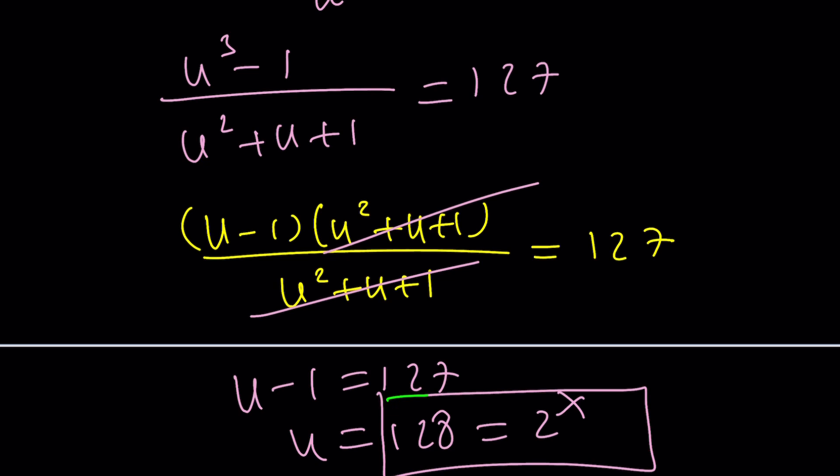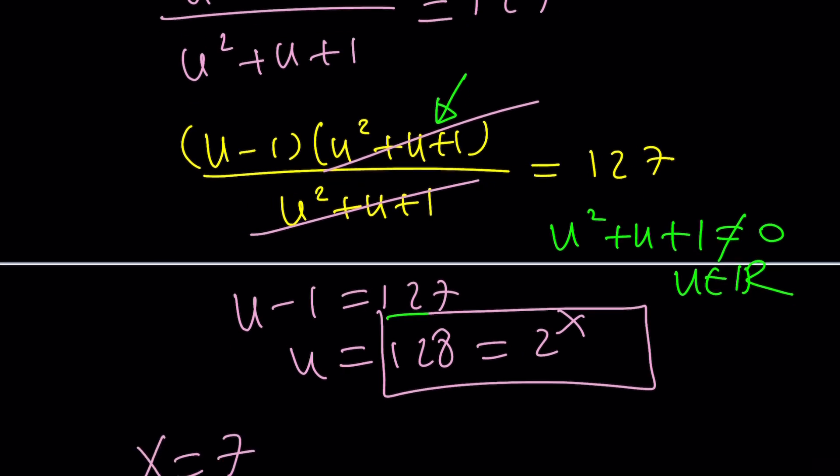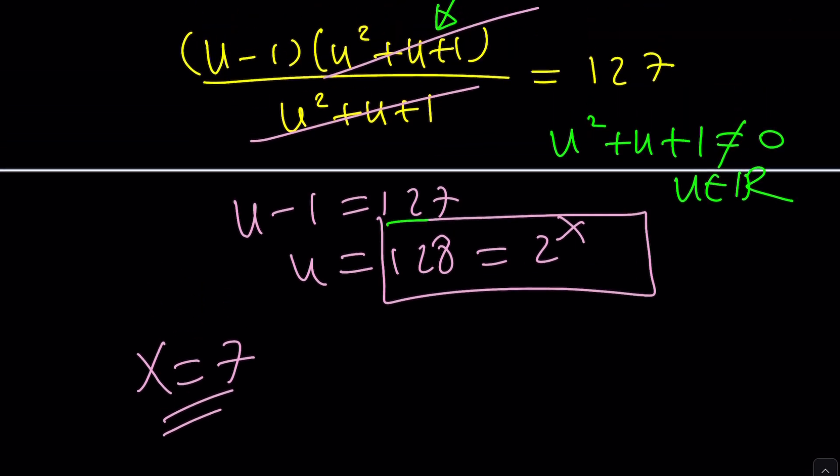Anyway, so this is how you can solve it, pretty much. And one of the things that I was saying is maybe there are complex solutions. Oh, by the way, one thing to be careful about is we need to make sure this is not zero. But as you know, this can't be zero for real values of U. If U is real, this can't be zero, right? Are there any complex solutions? Yeah, you can kind of think about it. I'm going to leave it as an open-ended question, okay?